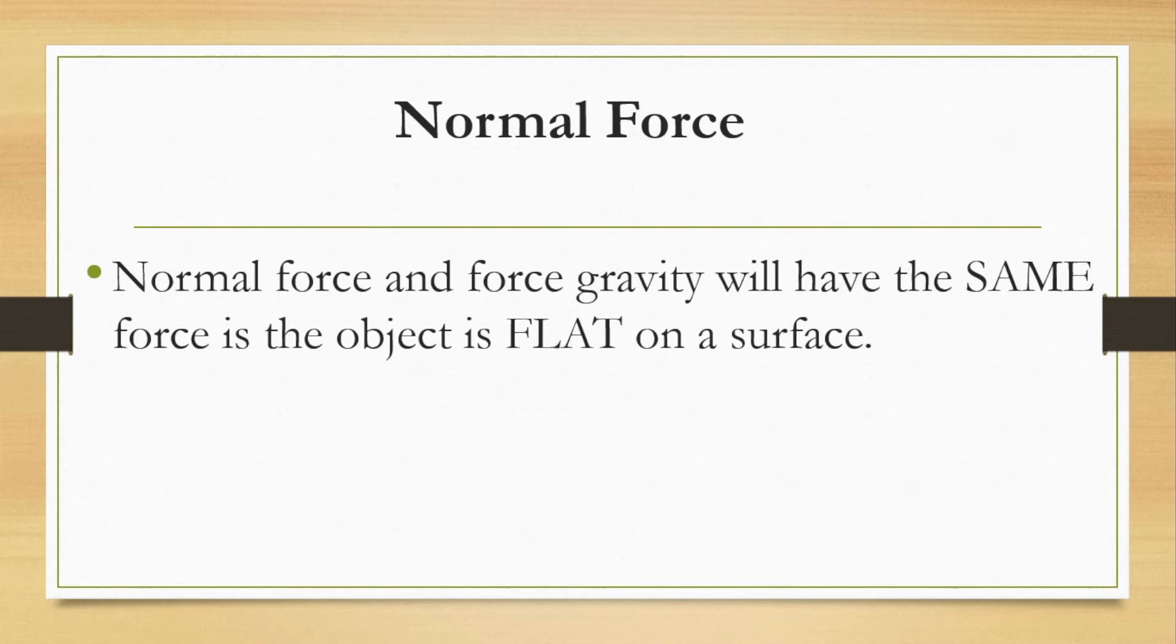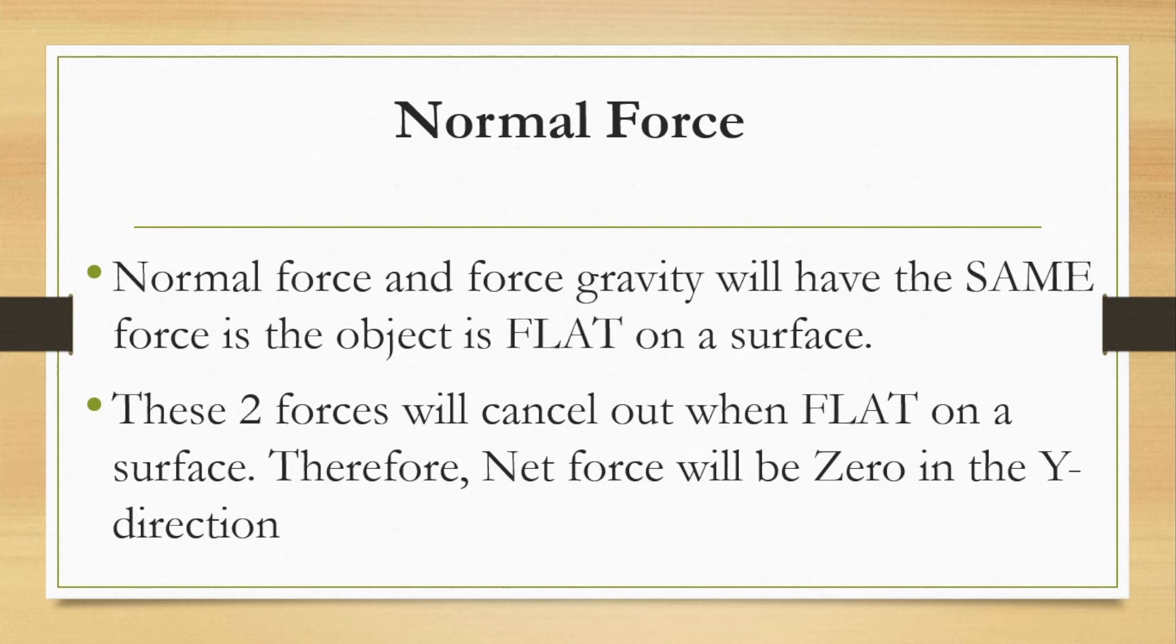Normal force and force gravity will have the same force if and only if that object is on a flat surface. These two forces are going to cancel out when they're on a flat surface. Therefore, the net force will be zero in that Y direction. And net force just means the total force. So let's say we had an object here and a force gravity pointed down and a force normal pointed up. Let's say our object had a force gravity of 10 Newtons. Well if it's on a flat surface, the force normal would also be 10 Newtons. These two would balance each other out, and by balance we mean that if we were to add these up, so we'd have 10 plus negative 10, would just give us zero Newtons. This is negative because it's pointing down. This is positive because it points up.